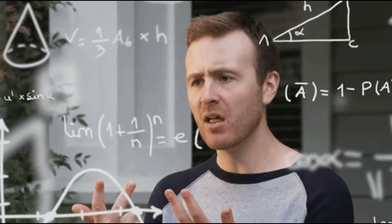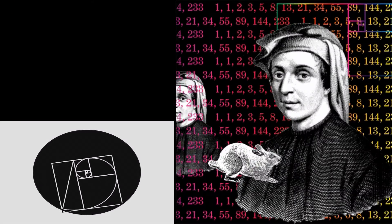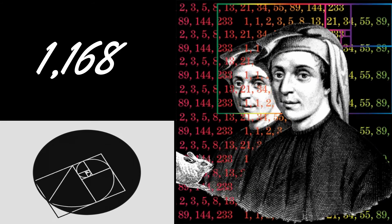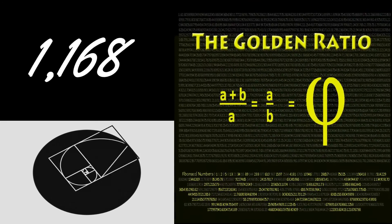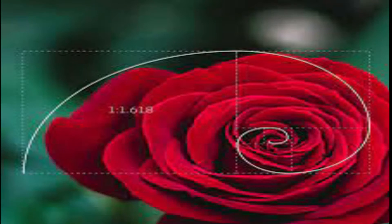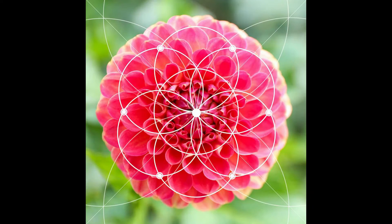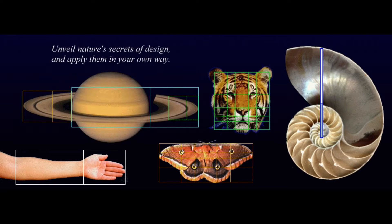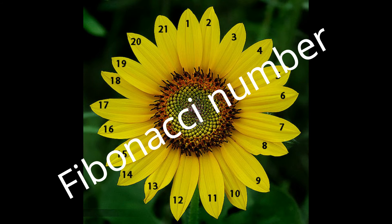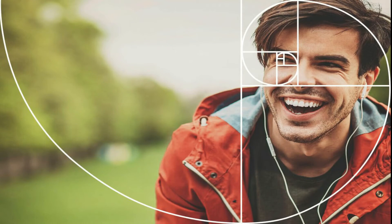The golden ratio is a unique mathematical relationship. The golden ratio equals about 1.618 and is represented by the Greek letter Phi. The golden ratio is sometimes called the divine proportion because of its frequency in the natural world. The number of petals on a flower, for instance, will often be a Fibonacci number.